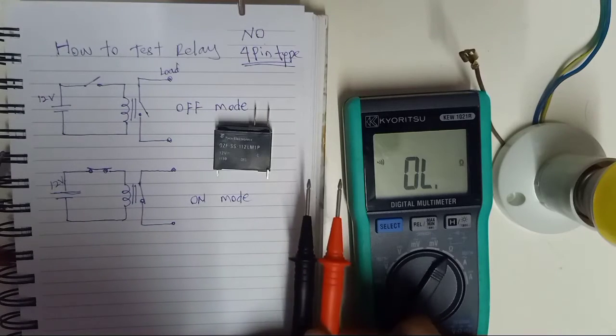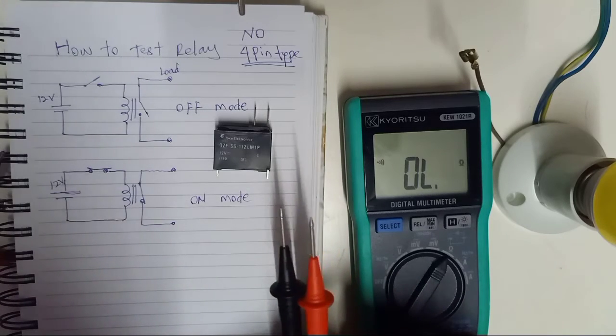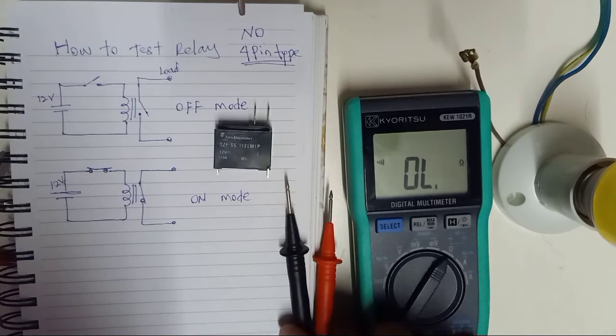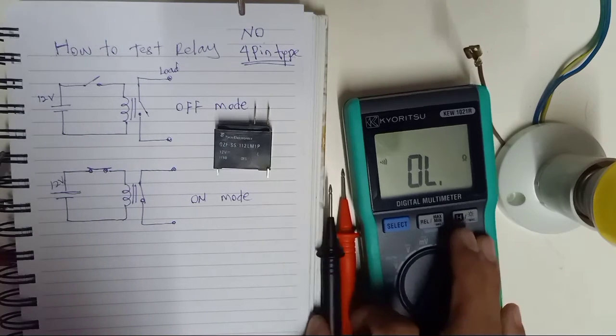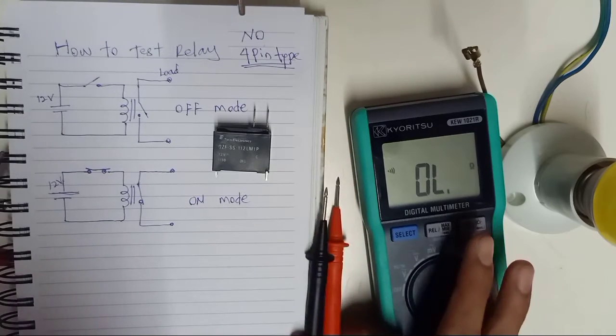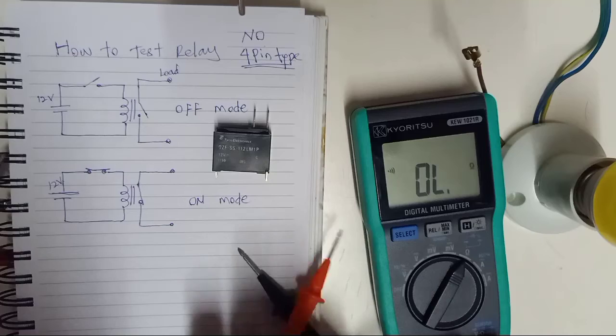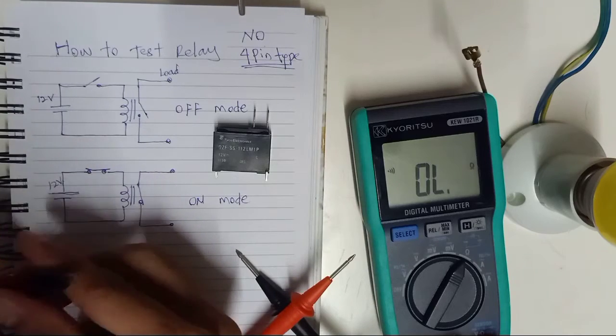Using a multimeter alone is a little bit difficult to identify if the relay is good or not. So after you already know your relay is 12V, then you need to have a 12V power supply.